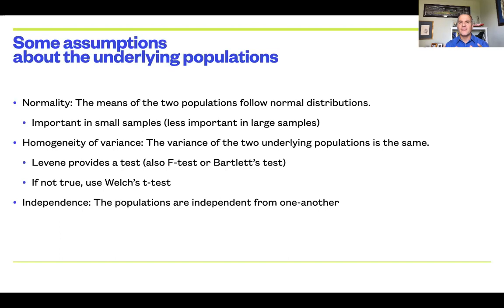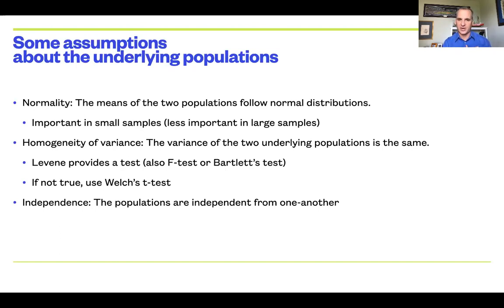If the variances are not the same between the two populations — so if Levene's is significant or we otherwise have reason to believe variances will be different — then we use what's called Welch's t-test. This is the t-test we use when we can't assume equal variances. Welch's t-test has a slightly different t value, different degrees of freedom, and slightly different conclusions — not hugely different, but more conservative. If we're taking the most conservative approach, it's often appropriate to just use Welch's t with equal variance not assumed.